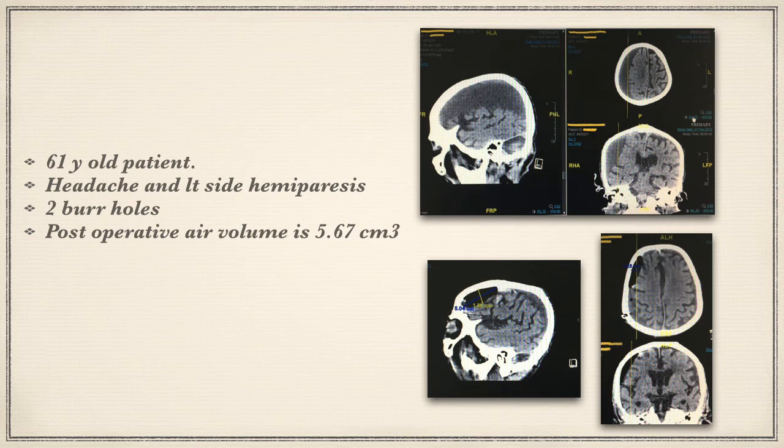This is a 61-year-old male patient presented with headache and left-side hemiparesis. His CT scan showed right fronto-parietal subdural hematoma. It was operated by two burr holes, and the postoperative air volume was 5.67 cubic centimeters.